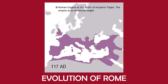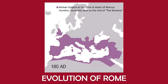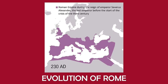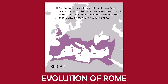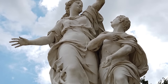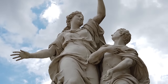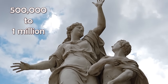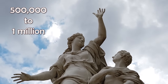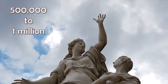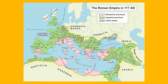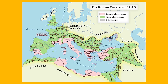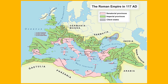During its imperial phase, it was amongst the largest empires in the ancient world, with an estimated 50 to 90 million inhabitants — roughly 20% of the world's population at the time. Estimates of the population size of Rome itself range from around 500,000 to as high as 1 million people at its peak. The empire covered around 5 million square kilometres, or around 1.9 million square miles, at its zenith in 117 AD.